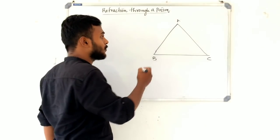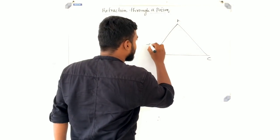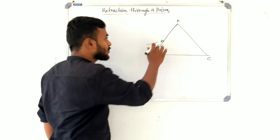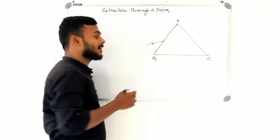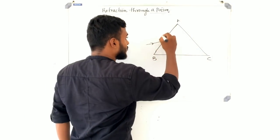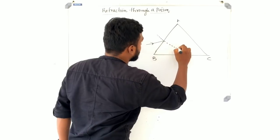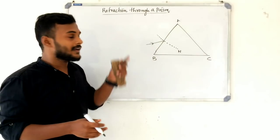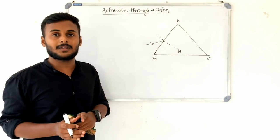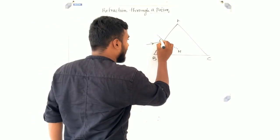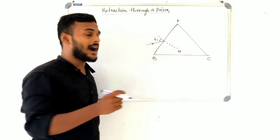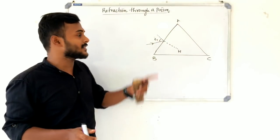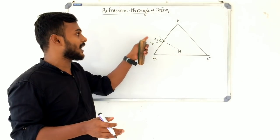We have to find the incident ray on the prism ABC. At the face AB, we draw a normal. The angle of incidence at face AB is called I1. So I1 is the angle of incidence at face AB, and R1 is the angle of refraction at that face.